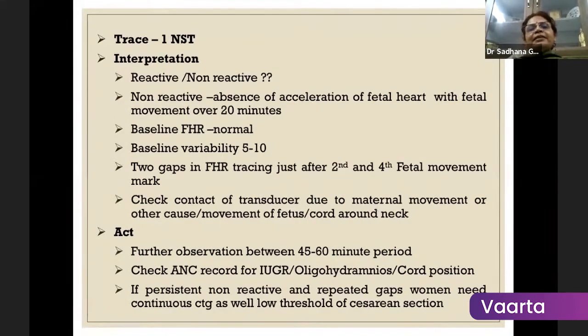So as Mukta says, baseline variability is less and there has been two things. There has been loss of contact or sometimes a cord around the neck with the compression. We sometimes get that loss of gap. So like Sanjay says, we have to see whether this patient is already having IUGR or oligohydramnios in ultrasound. What is the cord position? And in this situation, we have to be extra careful.